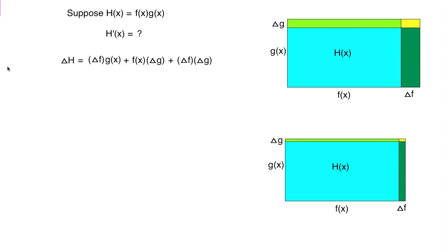So we can write, as we've done before, this change as an approximation. Delta h is pretty much the area of the dark green rectangle, which is delta f times the full amount of g, plus the area of the light green rectangle, which is the full amount of f times delta g. And that approximation gets better and better, the closer delta x gets to zero.